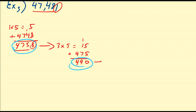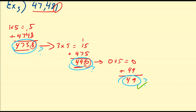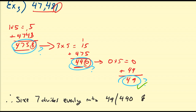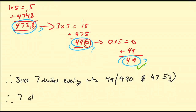But let's assume you do not know this. I'm going to grab the last digit, which is 0. So 0 times 5 is 0. Add to it the remaining number 49 — 9 plus 0 is 9, and then we have 4 — so that's 49. Is 49 divisible by 7? Hopefully you know that 7 times 7 is 49. Therefore, since 7 divides evenly into 49 and moreover 490 and 4,753, we can conclude that 7 also divides evenly into 47,481.